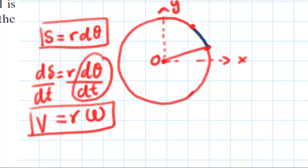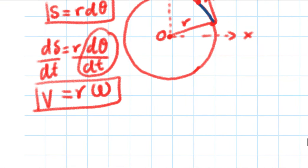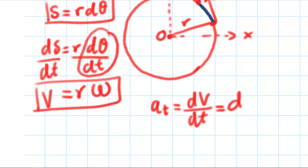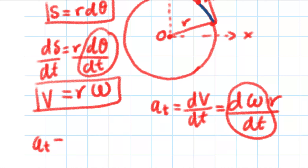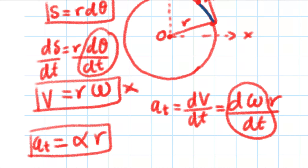For angular acceleration: acceleration is the change in velocity over change in time. Since velocity equals r·ω, we have Δv/Δt = r·(Δω/Δt). The change in angular velocity over time is angular acceleration α. Therefore, a_tangential = r·α. These are the two equations we need to find the velocity and acceleration of the bucket.